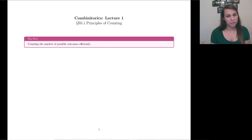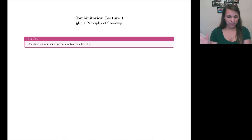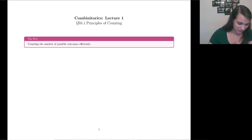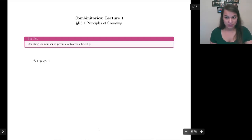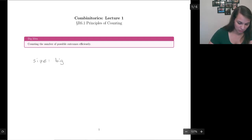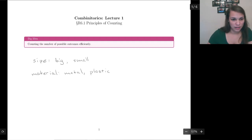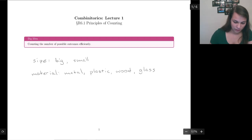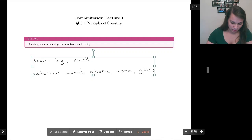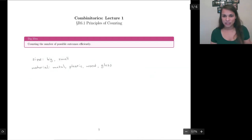Let's start off with how many different types of spoons I could be looking at. We'll keep it really simple. We can think about the size of the spoon — there are big spoons and there are small spoons. And we could have the material it's made out of: maybe metal spoons, plastic spoons, wood, or even glass spoons. So you could have a big plastic spoon, a small plastic spoon — there are a lot of different combinations.